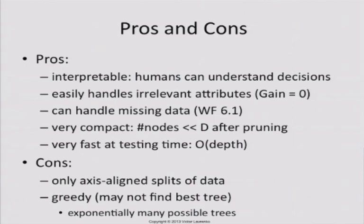Decision trees can handle missing data. They are also very compact as far as representation. This matters if you need to run something quickly or build a system that needs to work in real time. They're a good choice because after pruning, the number of nodes is usually a lot smaller than the number of attributes in the data set. And it's very fast at testing time — the fastest algorithm in this course, basically proportional to the depth of the tree.